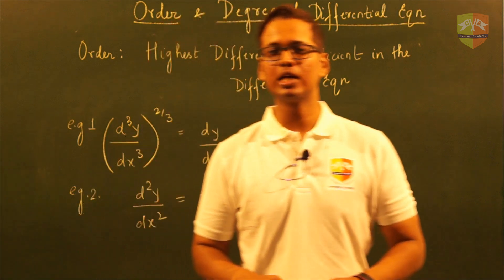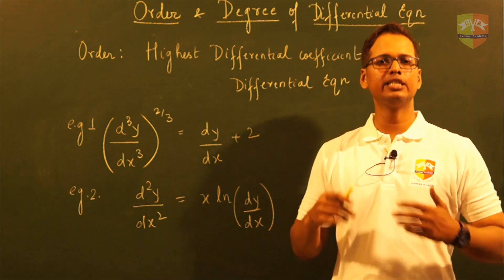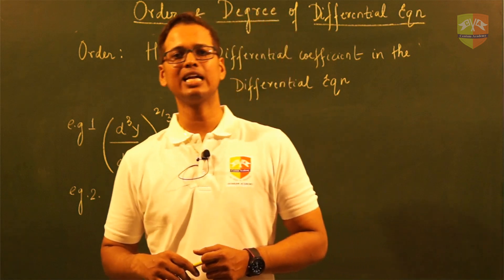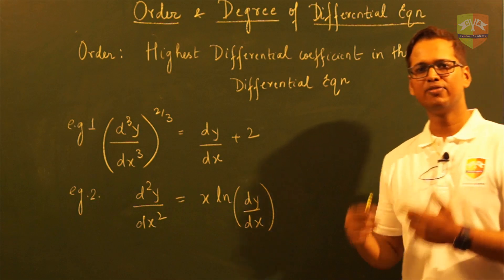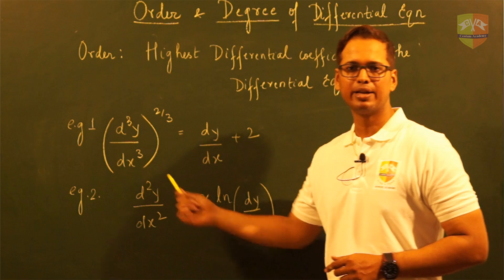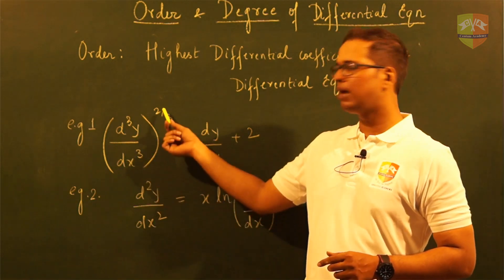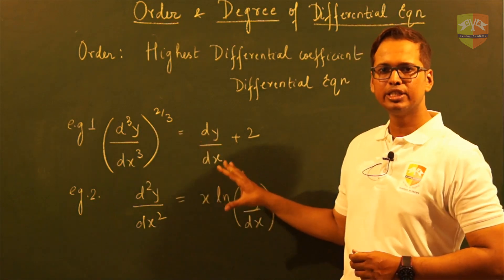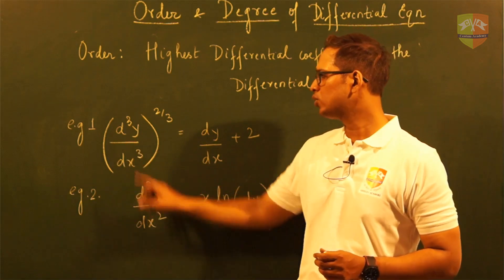Let's talk about the order and degree of a differential equation. Order of a differential equation is nothing but the highest differential coefficient of y with respect to x which occurs in that differential equation. To give you some examples of what I mean when I say highest differential coefficient of y with respect to x, let us take example number 1. You can see we have d³y by dx³ raised to the power of 2/3 equal to dy by dx plus 2. In this particular differential equation, the highest differential coefficient of y with respect to x is 3.